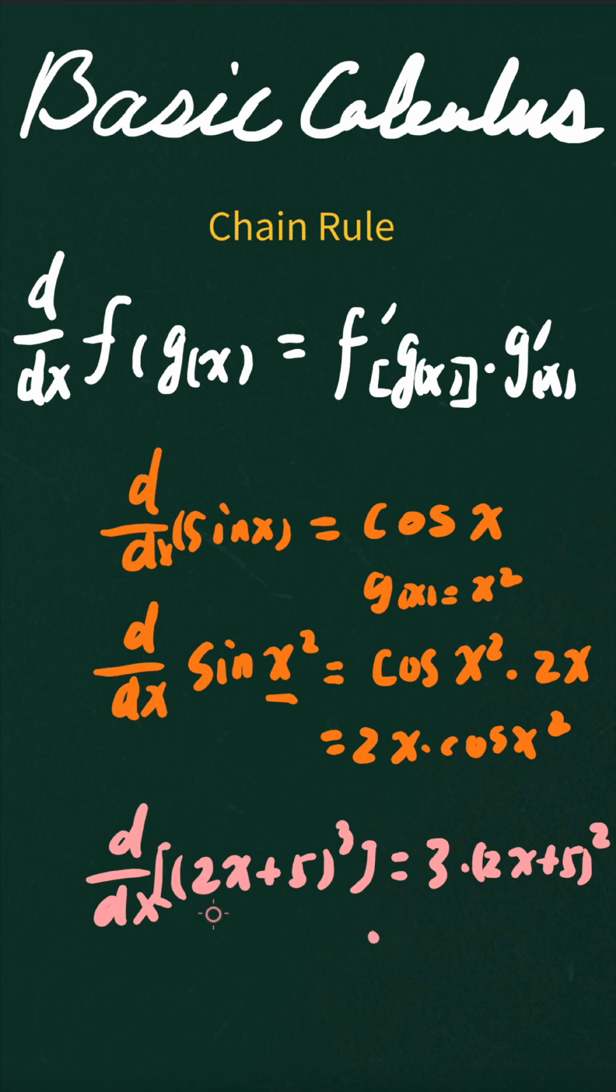And times the derivative of g(x). g(x) in this case is 2x plus 5. The derivative of it actually is 2. And then this whole thing is equal to 6 times (2x plus 5) raised to 3. Sorry, raised to 2.